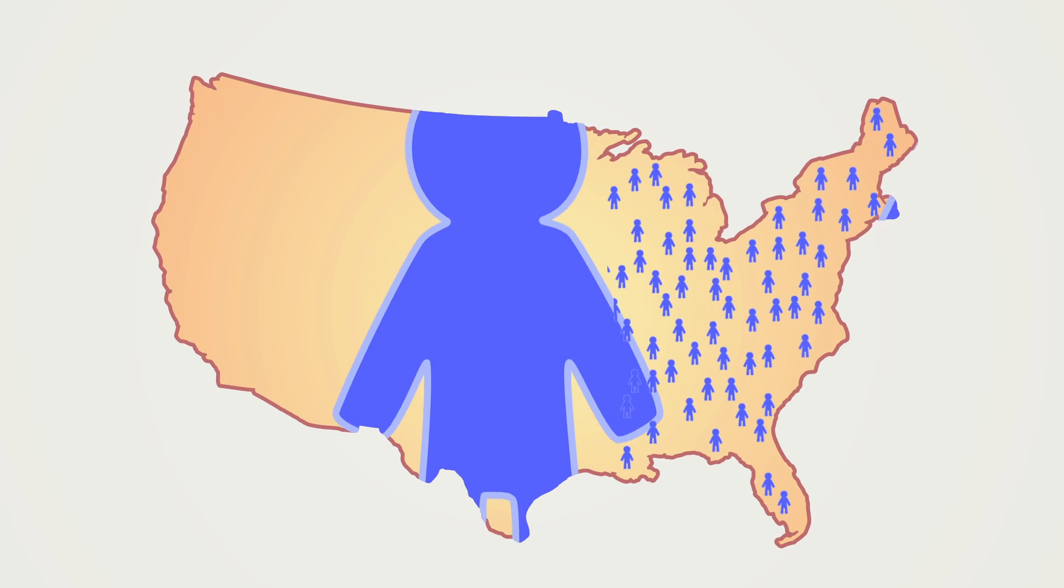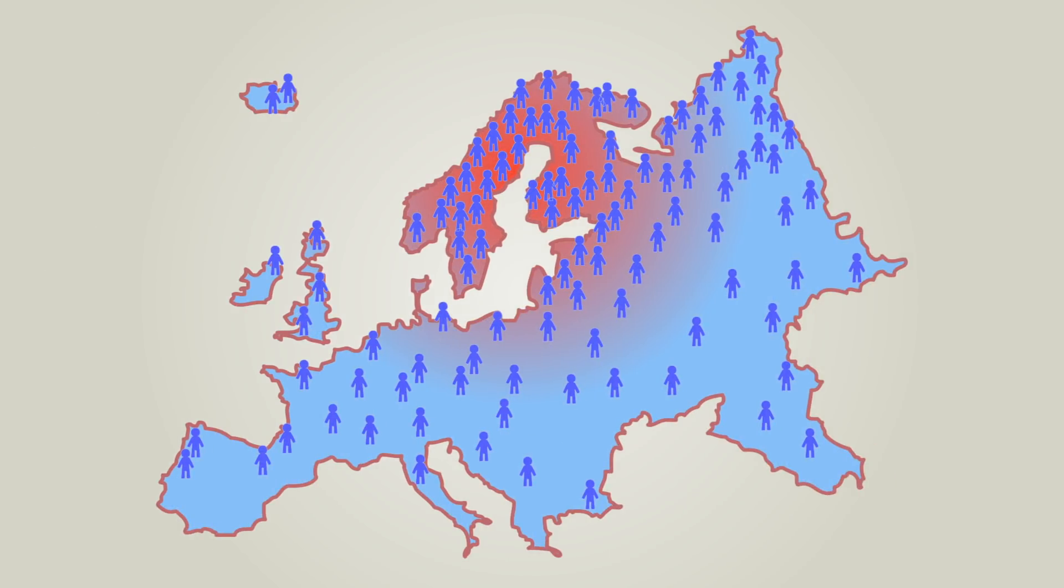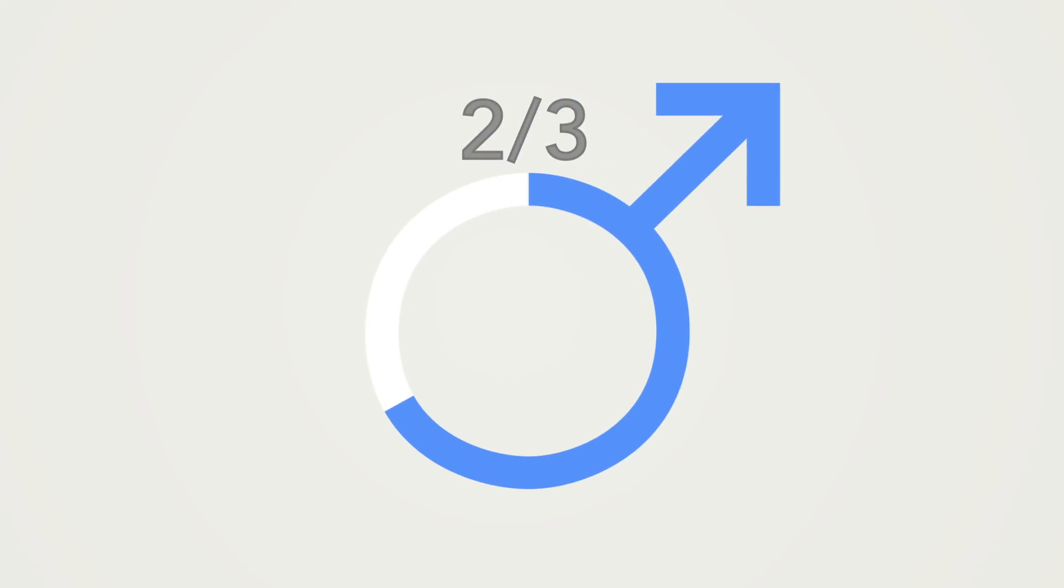In the United States about 30,000 people suffer from PSC. The concentration of PSC patients is highest in Scandinavia. Two thirds of PSC patients worldwide are men. The disease strikes all age groups including children, but the average age of diagnosis is 40.